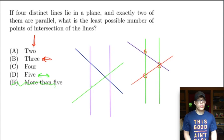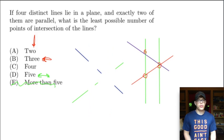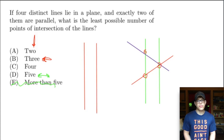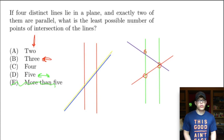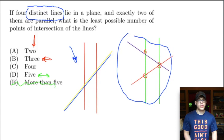The only lower answer choice is two. Could we possibly have just two points of intersection? To get a perfect score we need to definitively say two is not the answer. If we draw two parallel lines and a third line we already have two intersection points. For a fourth line to keep it at two, it would have to be the exact same as the third line — but our problem states four distinct lines. So two is impossible, and the correct answer is B, three.